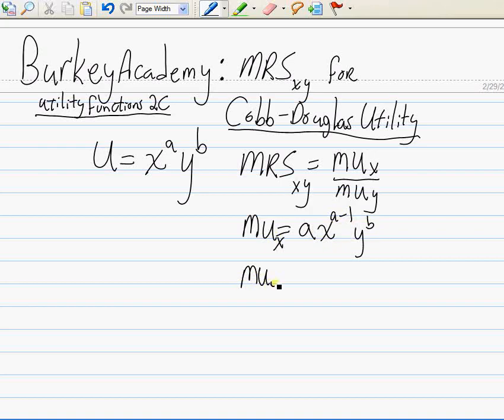Marginal utility of y equals b times y to the, well I didn't mean to put the y there, multiply the whole thing by the b. Let me just write down x to the a, I want to keep these in the same order, times y to the b minus 1. We're going to subtract 1 from that exponent on the y this time.